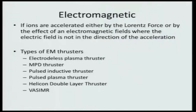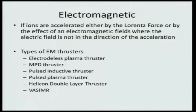With that, we conclude our discussion on electrothermal propulsion systems. Next, let us talk about electromagnetic propulsion systems. As the name suggests, acceleration is primarily provided by electromagnetic fields. If ions are accelerated either by Lorentz force or by the effect of electromagnetic fields where the electric field is not in the direction of acceleration, those devices are called electromagnetic propulsion devices. Some of the devices are: the electrodeless plasma thruster, the MPD thruster, the pulsed inductive thruster, the pulse plasma thruster, the Helicon double layer thruster, and VASIMR.